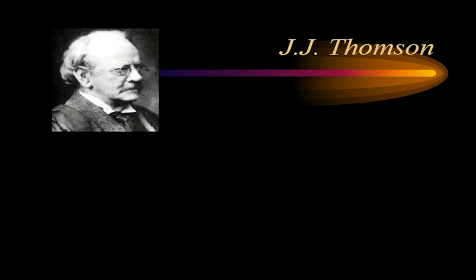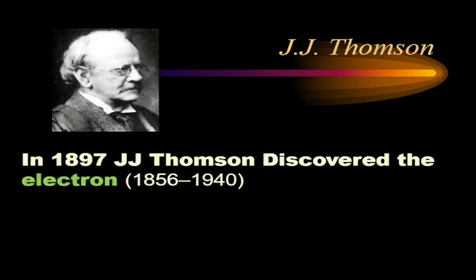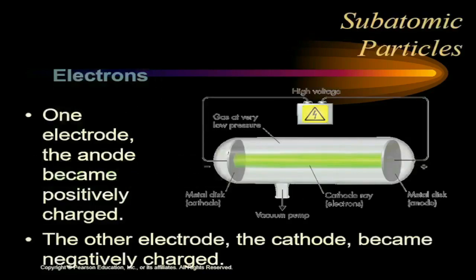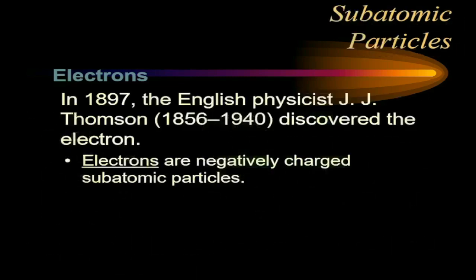In the year 1897, the English physicist J.J. Thomson, who lived from 1856 to 1940, put a sample of gas in the tube and observed a light emanating from the negatively charged plate going to the positive plate. Following Coulomb's law, these things must be negatively charged and are said to be charge carriers. He called this particle the electron.